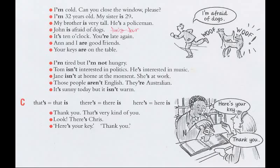Example sentences: I am cold — can you close the window, please? I am 32 years old. My sister is 29. My brother is very tall. He is a policeman. John is afraid of dogs. It's 10 o'clock. You're late again. Ann and I are good friends. Your keys are on the table.